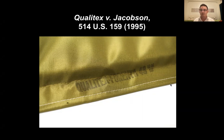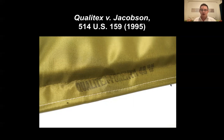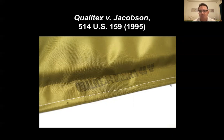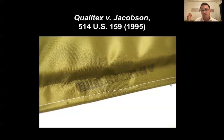What did the court say? Essentially, when it comes to color, it can be protected, but the claimant has to show that the color is in fact communicating information about source to consumers. The trademark claimant has to show that this mark — analogous to a descriptive mark — has actually acquired secondary meaning and is communicating information about source to consumers. The court analogized to the Abercrombie hierarchy of trademarks, placing color in the descriptive category. So it can be a mark, but there's a burden on the claimant to show secondary meaning.